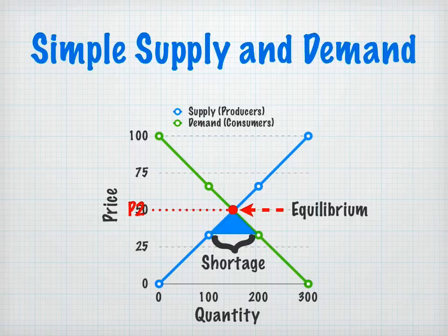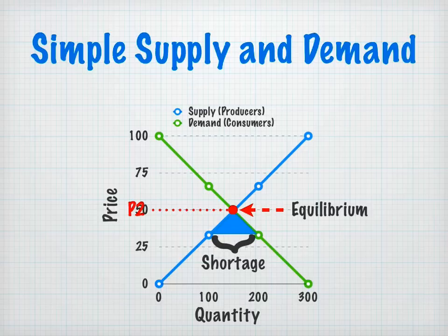All that to say: there is incentive for producers to produce more at higher prices, but higher prices also drive consumer demand lower. When the price is lowered, there is less incentive for producers to produce, and when the price is lowered, there is more demand for a certain good.